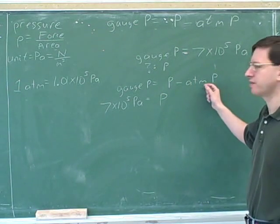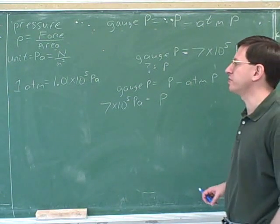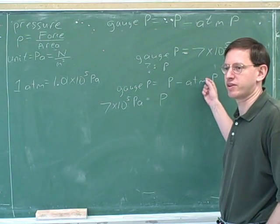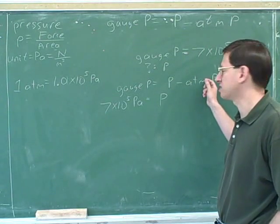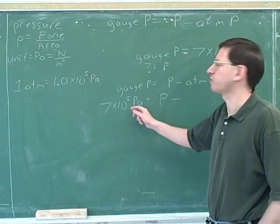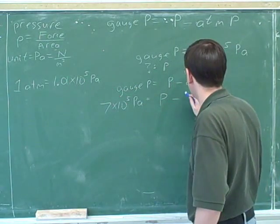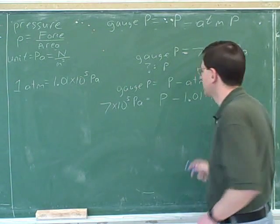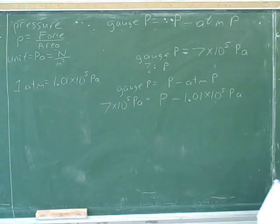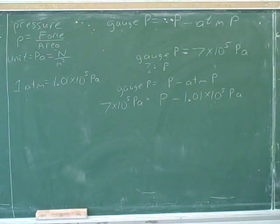Here's the trickiest part: what should we plug in for the atmospheric pressure? It's 1.01 times 10 to the 5th Pascals. In the previous problem we plugged in 1 atmosphere because we were working in atmospheres. But here we want to work in Pascals, so we have to use 1.01 times 10 to the 5th Pascals — an important number to have recorded. The tricky thing is to plug in atmospheric pressure in Pascals: 1 atmosphere equals 1.01 times 10 to the 5th Pascals.